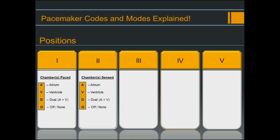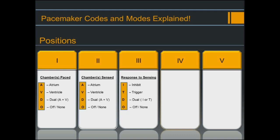The second position represents the chamber or chambers that the pacemaker will sense. Again, you have A for atrium, V for ventricle, D for dual (A and V), and O for off. The third position represents how the pacemaker will respond to the sensing in position two.